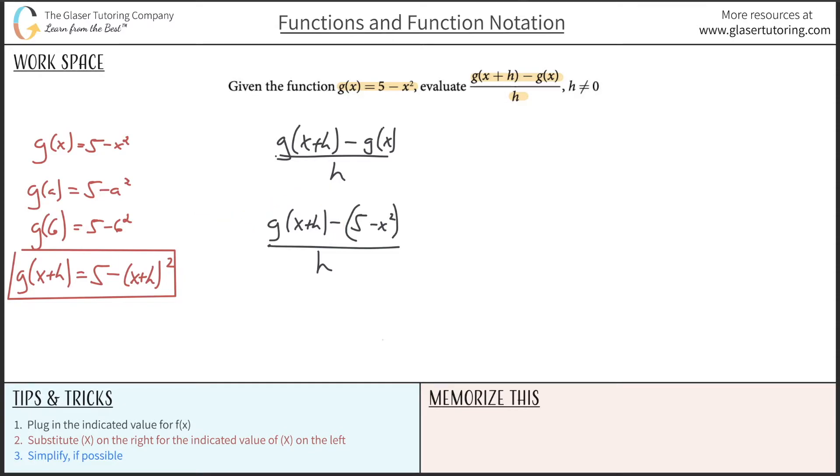So now instead of writing g of x plus h, I'm now going to write what I found it to be. So it's 5 minus x plus h squared. Now this is all I can do - I substituted both functional values in the numerator, and I can't do anything with h in the denominator, so now all I'm going to try to simplify this. So if you notice the steps, I plugged in the indicated values of f of x, then I substituted those x values, and now I'm going to simplify.